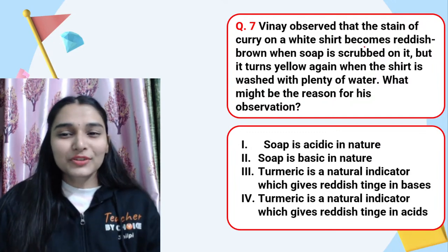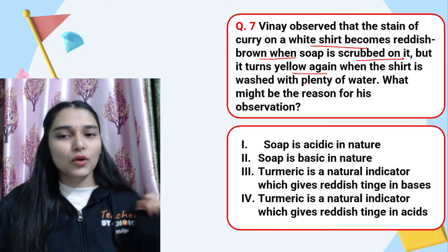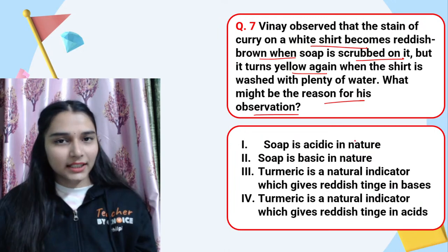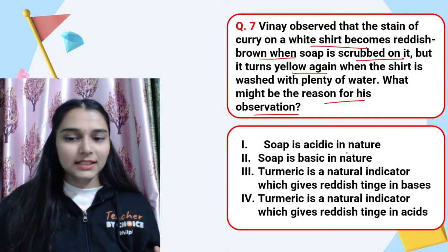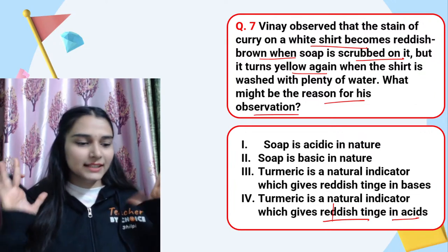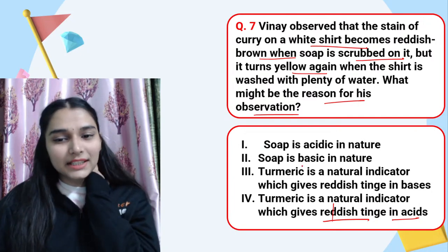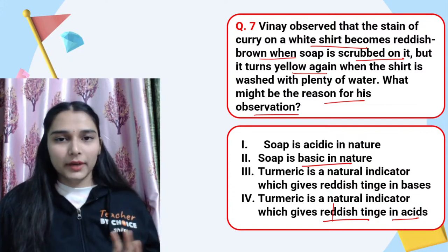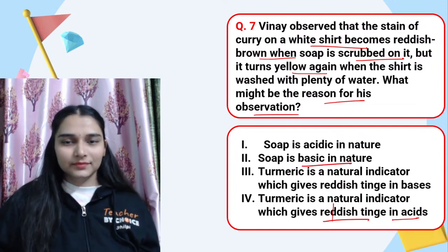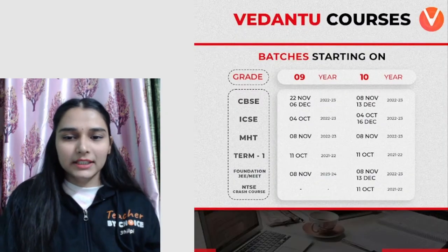Seventh question: a curry stain on a white shirt becomes reddish-brown when soap is scrubbed on it, but turns yellow again when washed with water. The correct statements are: soap is basic in nature, and turmeric is a natural indicator which gives a reddish tinge in bases. When soap (a base) is applied to the curry stain containing turmeric, it turns red. When washed with plenty of water, it returns to yellow.